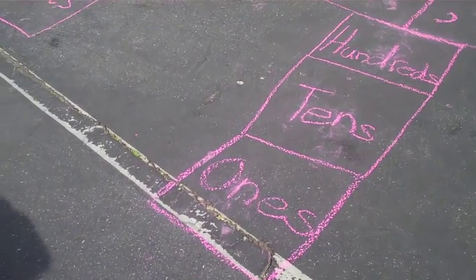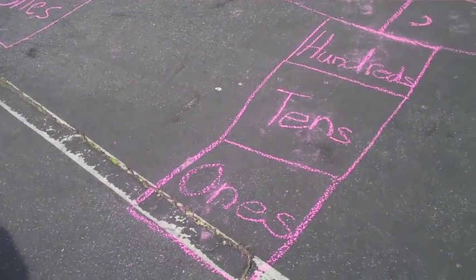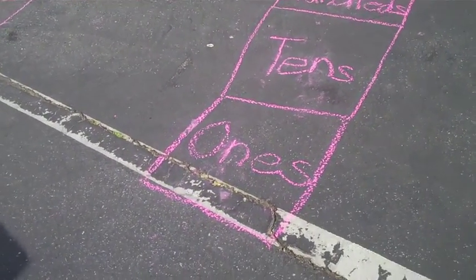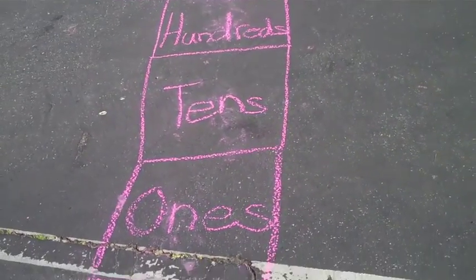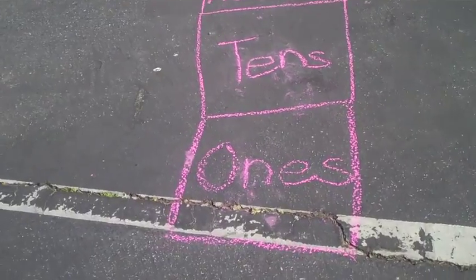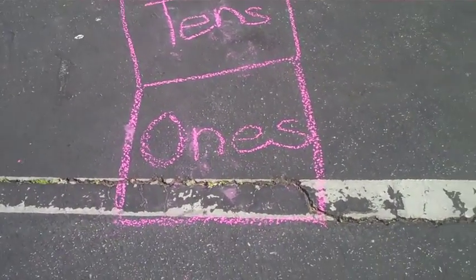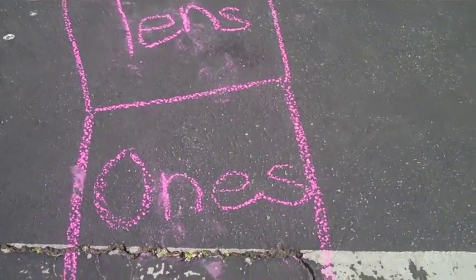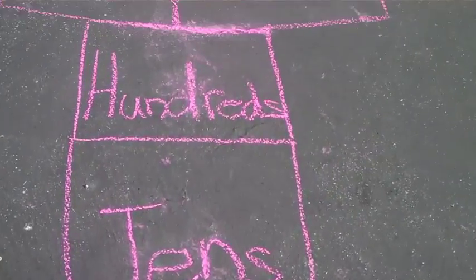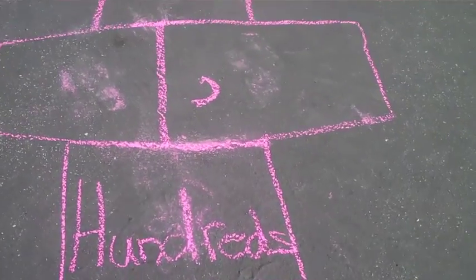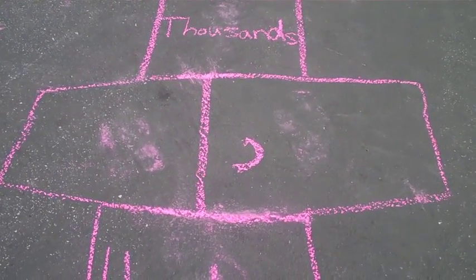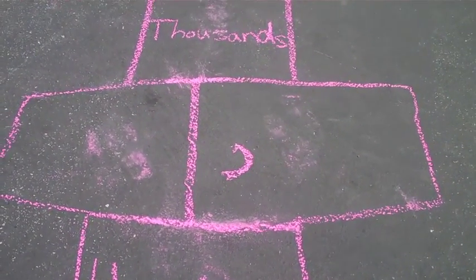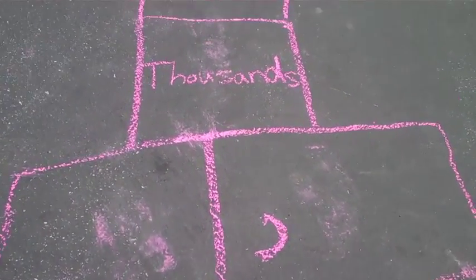As students jump into each box, they call out the name of that box. For example, for the first three boxes, the students call out ones, tens, hundreds. The next box is the double jump for the comma. The last two boxes are thousands and ten thousands.